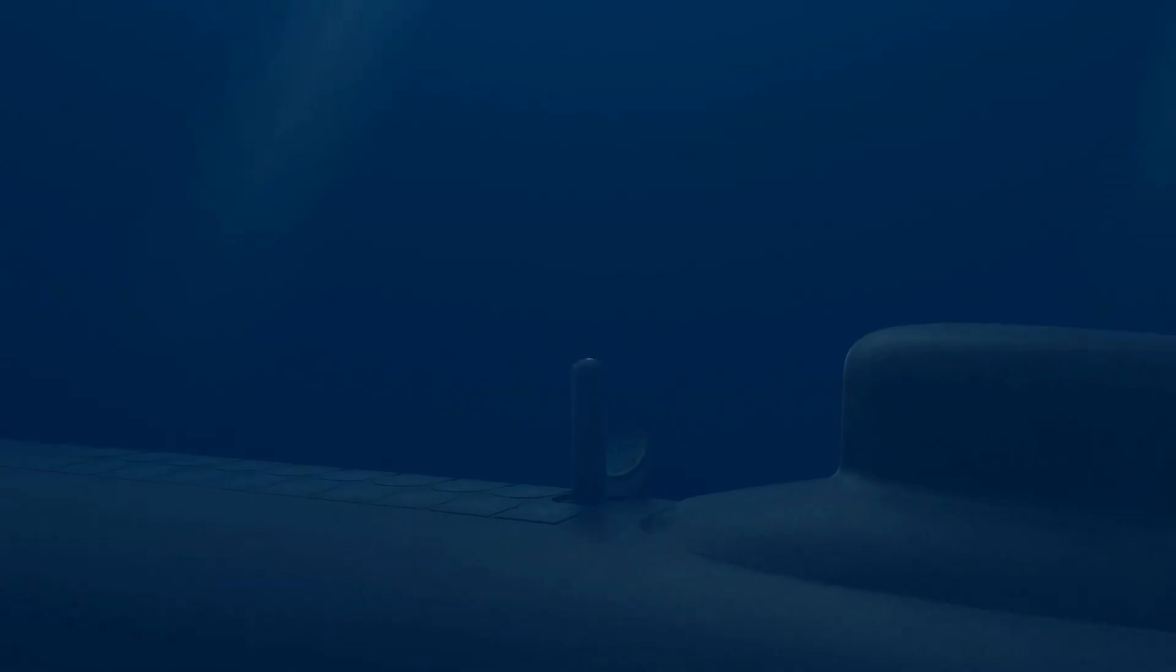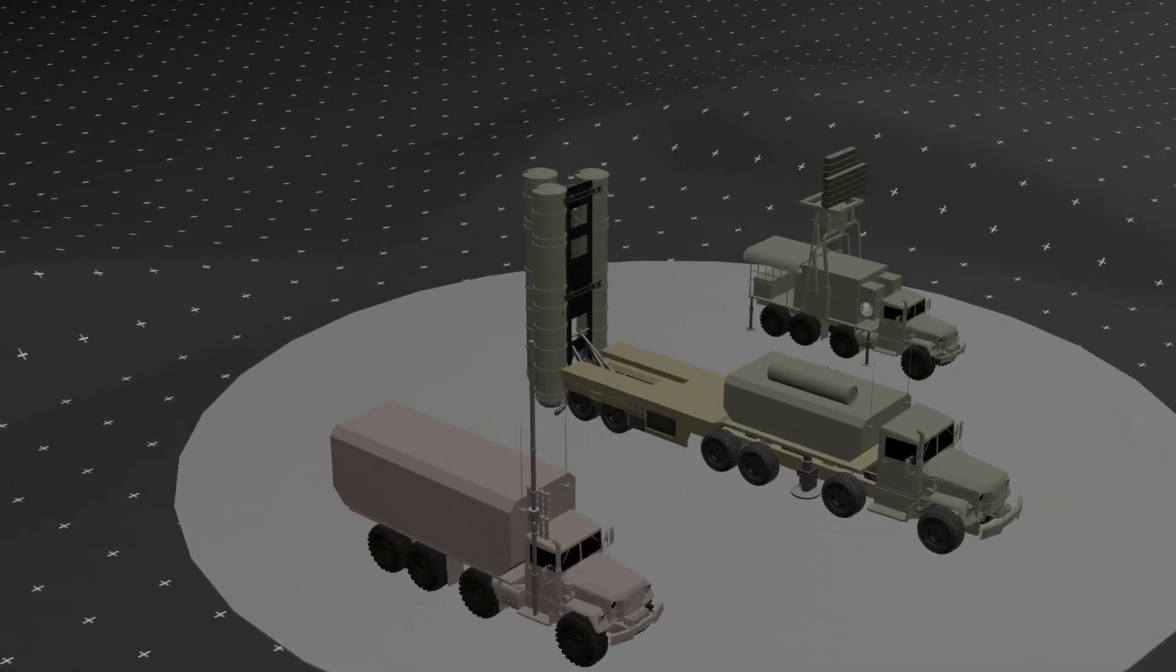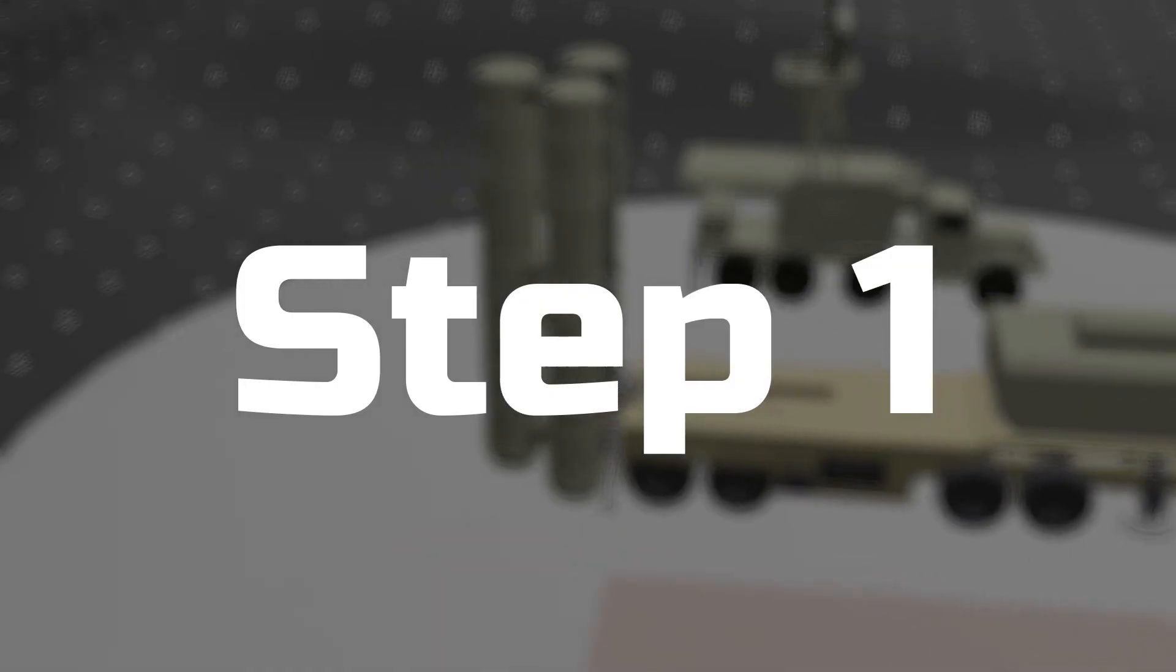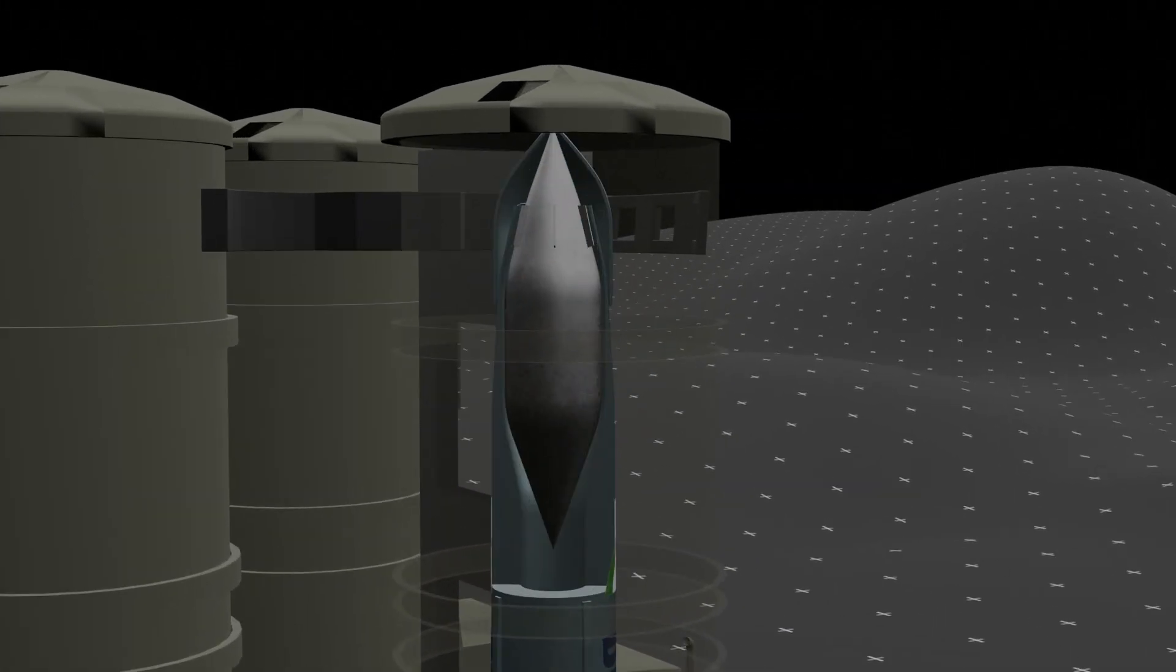Brahmos can be launched from submarines, fighter jets, and surface platforms, and India possesses all three capabilities. Step 1: The missile's nose cone houses the warhead, which can weigh up to 300 kg and may carry a nuclear payload.